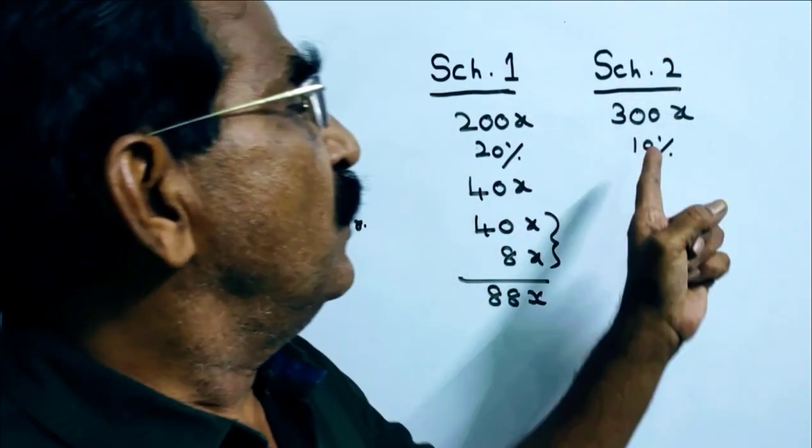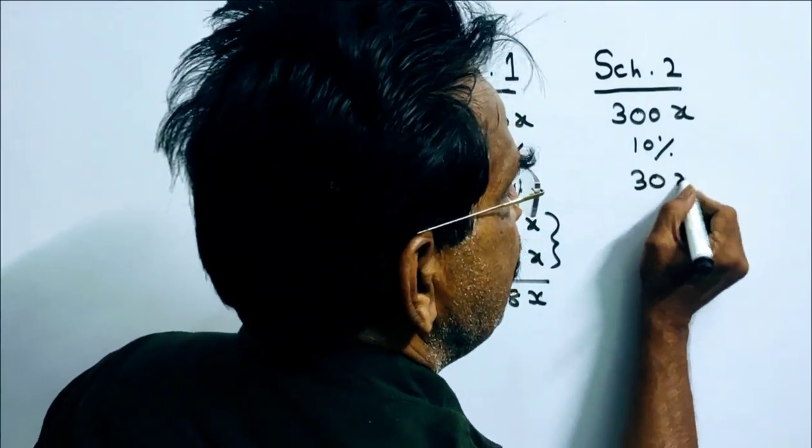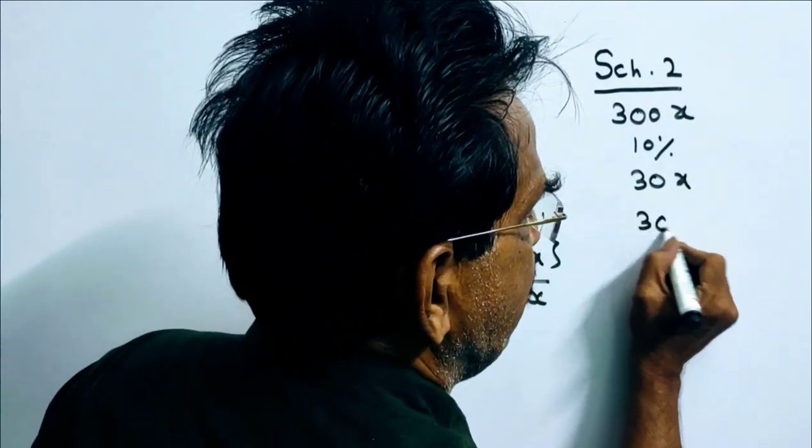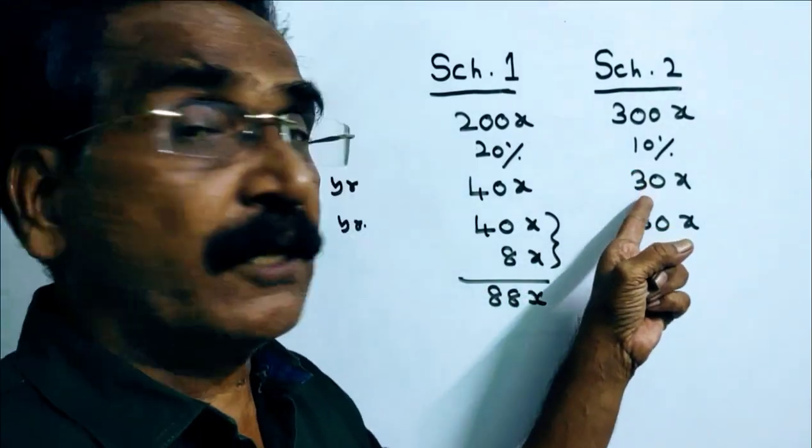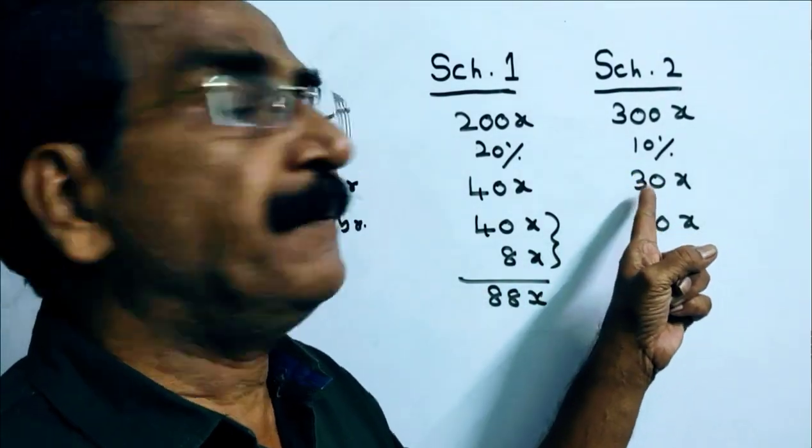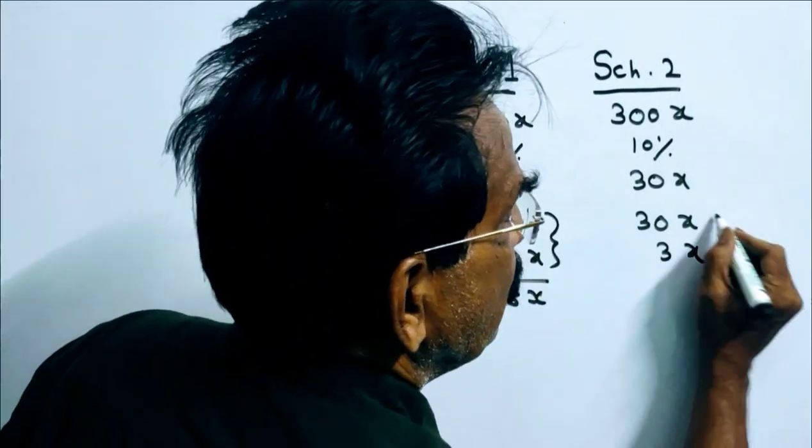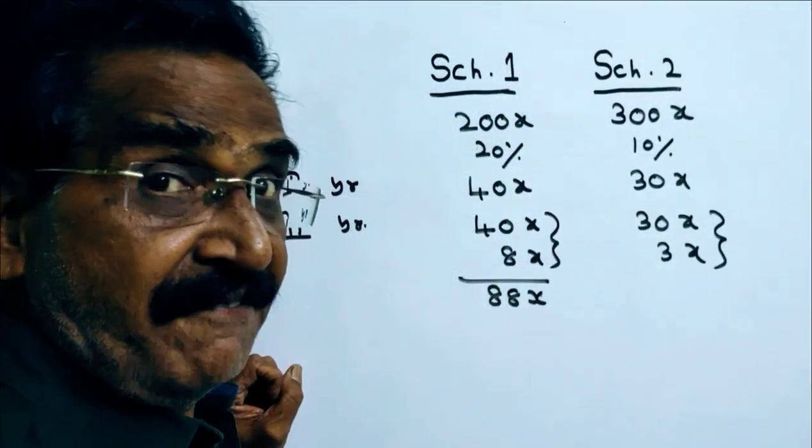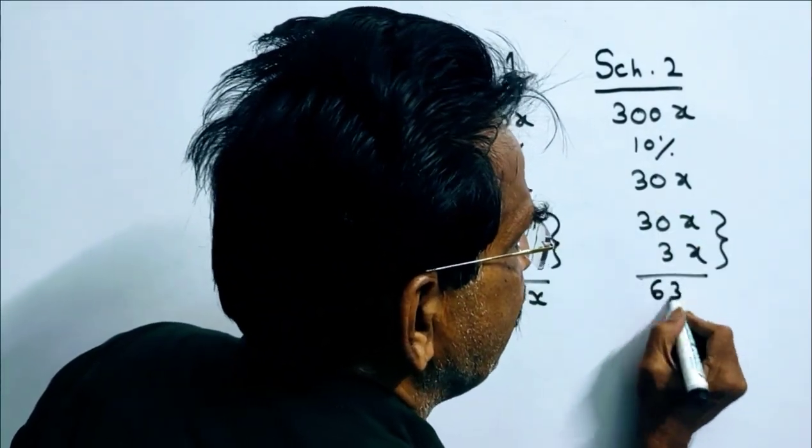In scheme 2, 10% of 300x is 30x. Second year also he gets the same interest, 30x. Plus he gets interest on interest. So 10% on 30x, that is 3x. So this is the interest for the second year. So the total interest is 63x.